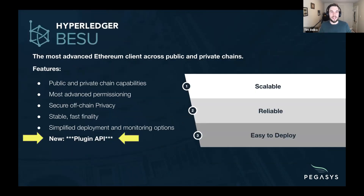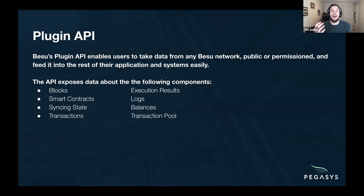Hyperledger Besu is our flagship product. It's an Ethereum client that works for both public and private networks. We launched it about two years ago and it has everything you'd expect from an Ethereum client. More recently, we've added a plugin API to it. This plugin API allows users to take data from a Besu network and feed it directly into the rest of their application, whether it's a permission network or a network like mainnet. You can build a plugin that'll interact with data in the client directly, so you don't have to constantly poll the data out of your client.